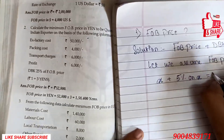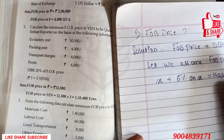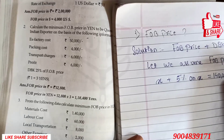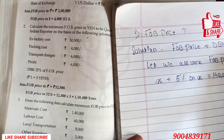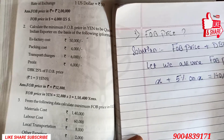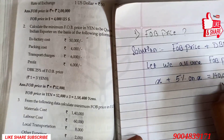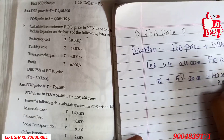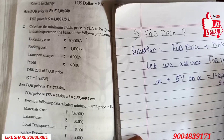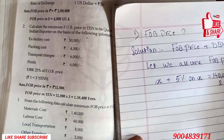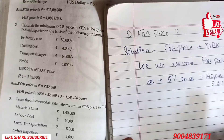So we write: 1,40,000 plus 60,000 plus 8,000 plus 2,000. Then we add profit, which is 20% on FOB cost. We will first calculate the total cost, then calculate 20% profit.